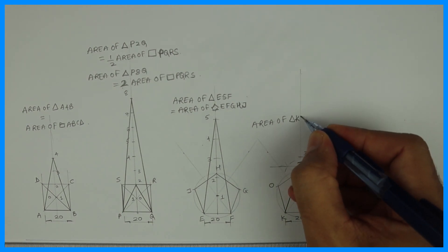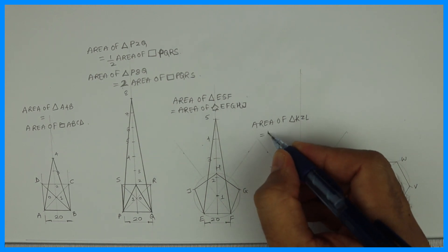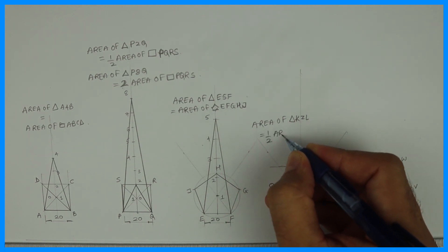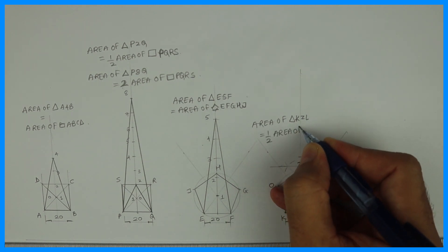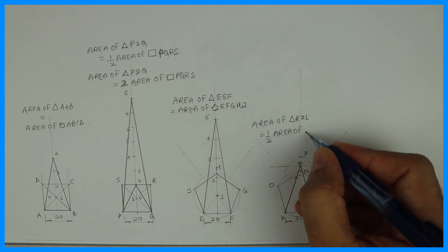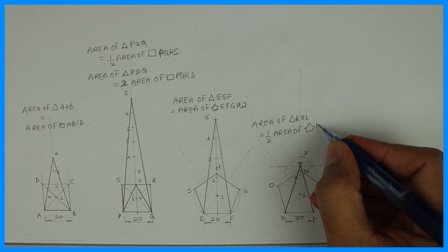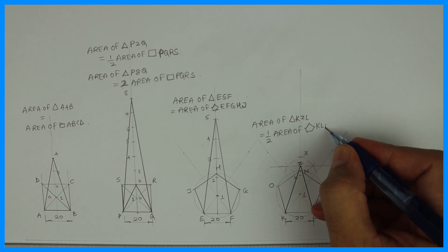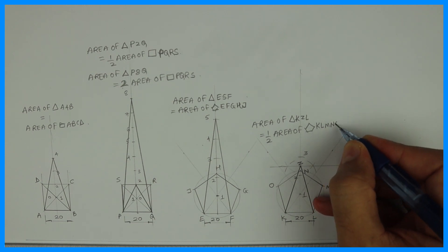Area of triangle KZL is equal to half the area of pentagon KLMNO.